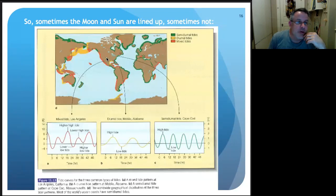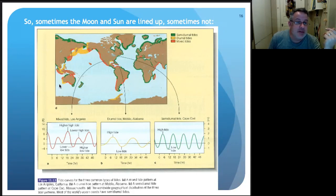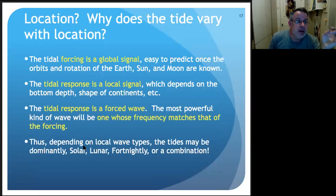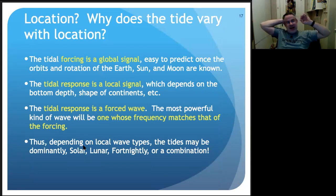This is a map of the world showing the places where the semi-diurnal tide (twice per day, typically lunar), or diurnal tide (once per day), or mixed tides are dominant — and you can see it's not an obvious pattern why that would be. All different kinds of tides in all different kinds of places. So the tidal forcing is a global signal — the whole Earth experiences some fraction of this — but the tidal response is local, which depends on the bottom depth and the shape of the continents.